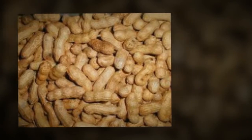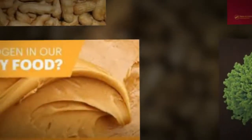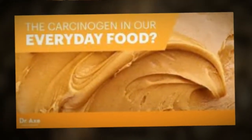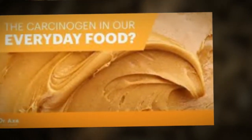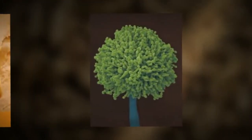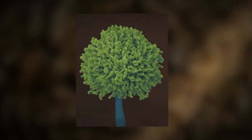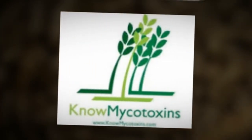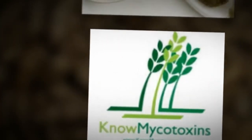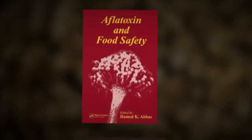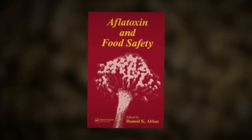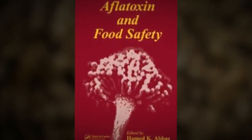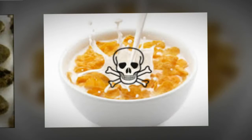Where do aflatoxins occur? Food products are the main sources of fungal contamination that produce aflatoxins. Cereals, oilseeds, spices, tree nuts, and rice milk — these major food products are vulnerable to infection by toxin-producing fungi. How are they harmful?